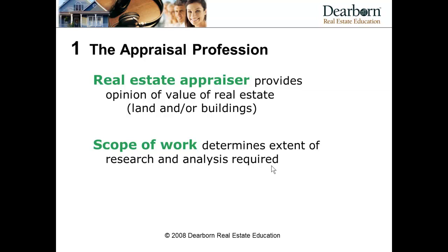So we'll start by looking at the appraiser's work. What does an appraiser appraise and how does he do that? As a brief overview, what we'll be talking about is real estate appraisal as opposed to personal property appraisal. Real estate consists of land and buildings or improvements. Personal property may be jewelry, farm equipment, industrial equipment, or it can also be intangible things like the goodwill associated with a business or the going concern value.